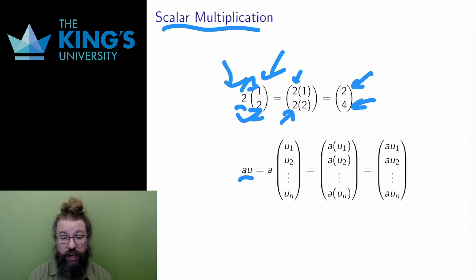To write this generally, I use the variable a to stand for an arbitrary scalar, and u to stand for an arbitrary vector in Rn. If I write u in its components, u1, u2, up to un, then scalar multiplication is multiplying a by each of the components one at a time, and the result is a new vector in Rn with entries a times u1, a times u2, all the way up to a times un. This multiplication is something quite new. Number multiplication takes two numbers and produces a number. This multiplication takes two different things, a scalar and a vector, and produces a new vector.